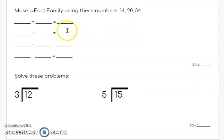For the next section, it's the same thing, except this time we're going to be using the numbers 14, 20, and 34. So you're going to be writing me two addition sentences for those numbers and two subtraction sentences for those numbers. That's 14, 20, and 34.